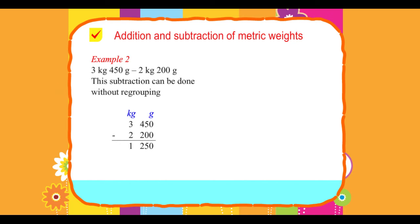kg grams: 3 450 minus 2 200 equals 1 250.